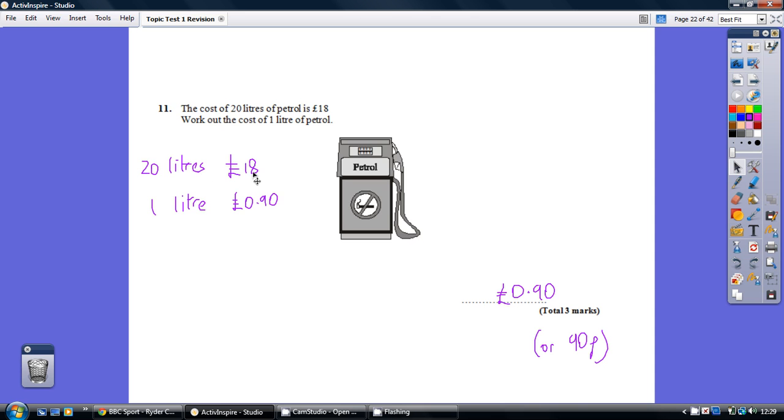Well if 20 litres is this, one litre is going to be a 20th of this. On your calculator, 18 divided by 20, we get 0.9 pounds. So 0.9 or 90p.